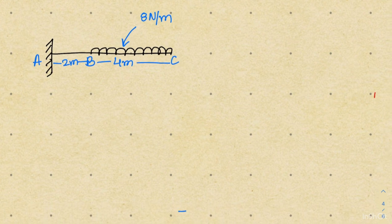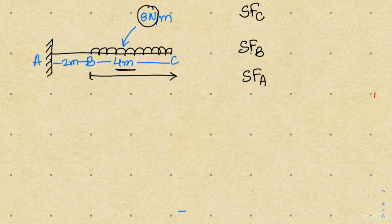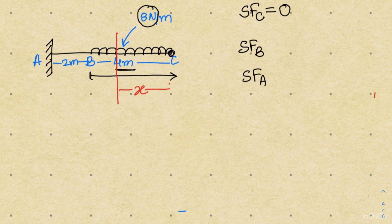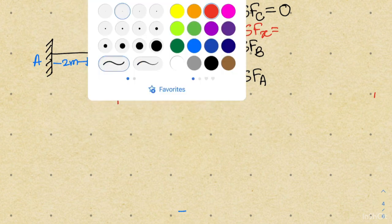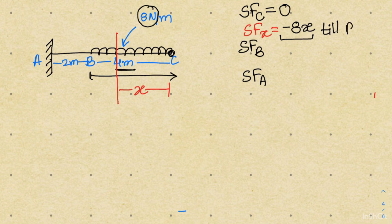Now let's take another problem where the uniformly distributed load does not cover the entire length of the beam. The load is distributed only from point B to point C over a length of 4 meters, with an intensity of 8 newton per meter. We need to find the shear force at point C, point B, and point A. The shear force at point C will be 0. For any distance x between C and B, the shear force is minus 8 times x.